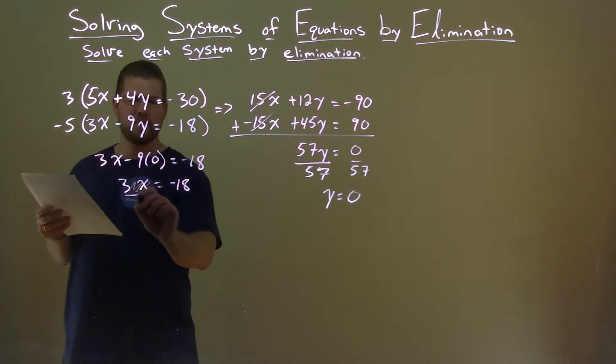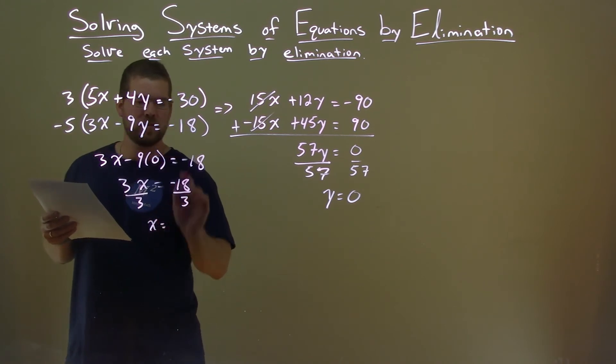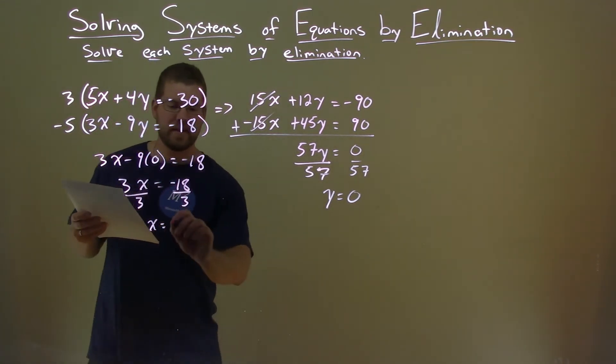All right. Divide both sides by 3. And x equals, well, negative 18 divided by 3 is negative 6.